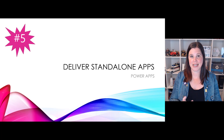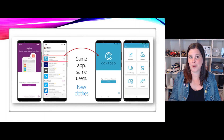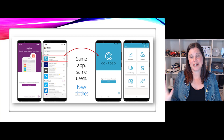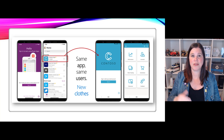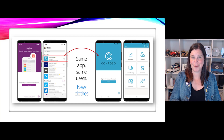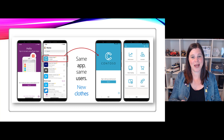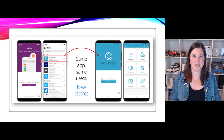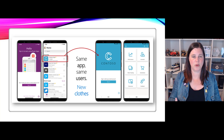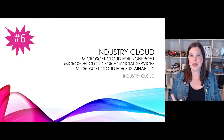At number five, the ability to deliver standalone apps — you can package up and deliver your app through Google Play or the Apple Store, fully branded, operating as a standalone app on the device rather than going through the Power Apps app. Important to note: this doesn't bypass licensing. Users still need to be licensed and authenticated, but it means you can package, brand, and deploy the app much more easily.